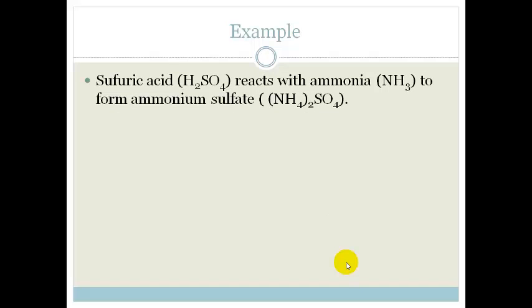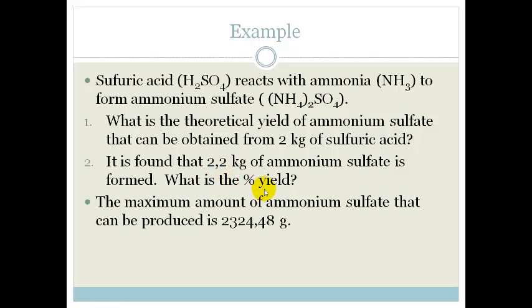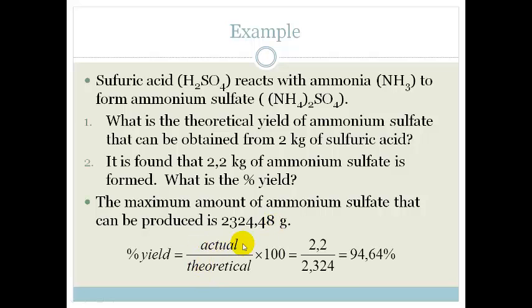Now, let's look at question two. Question two says we didn't get that full 2,320 odd grams. We only got 2.2 kilograms, and they want to know what is the percentage yield. But remember, the maximum amount we got was 2,324.48 grams. So, we can use a calculation which is actual over theoretical, which is 2.2 over 2.324, which gives you 94.64%, which is awesome. That is a fantastic percentage for a chemical reaction. So, that is very good, and it means that your reactions worked very well.